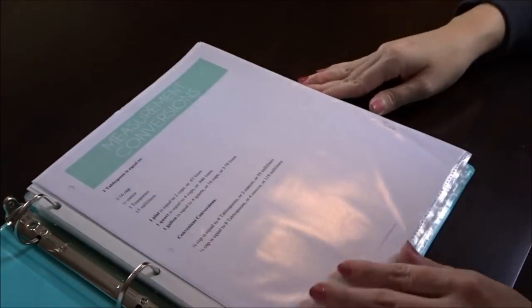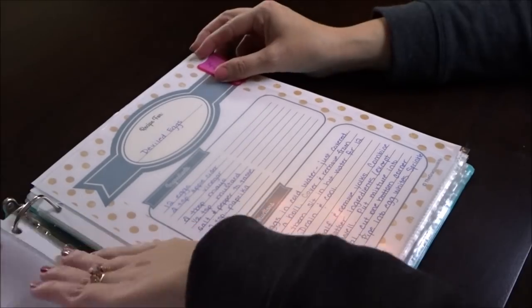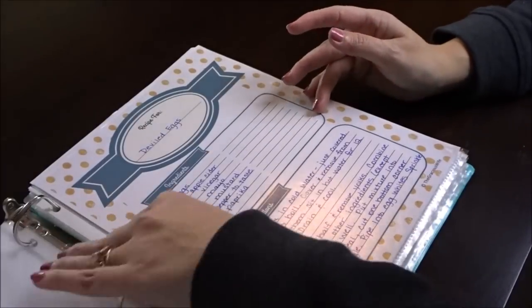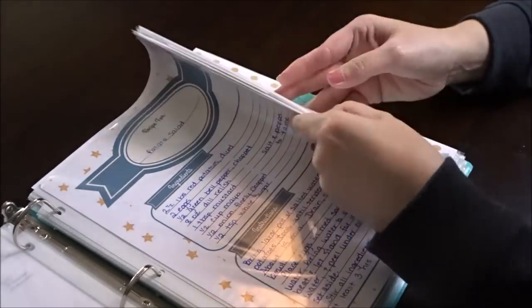If we like them, they'll get filed in the binder with the rest. I've got my conversions and substitutions in the front, which come in handy. And then I've just got my five sections.